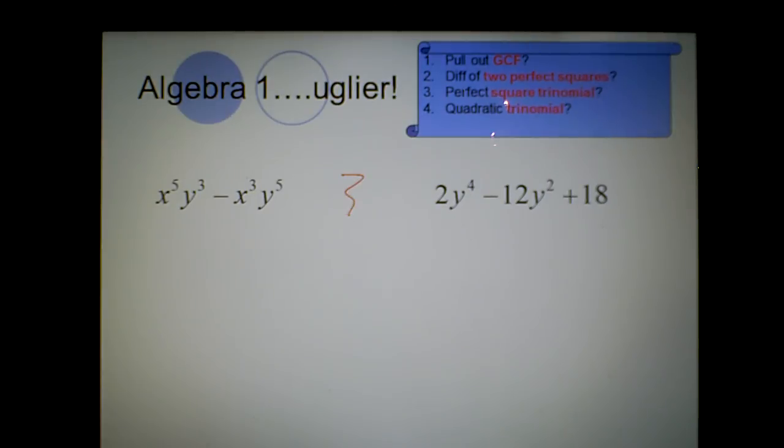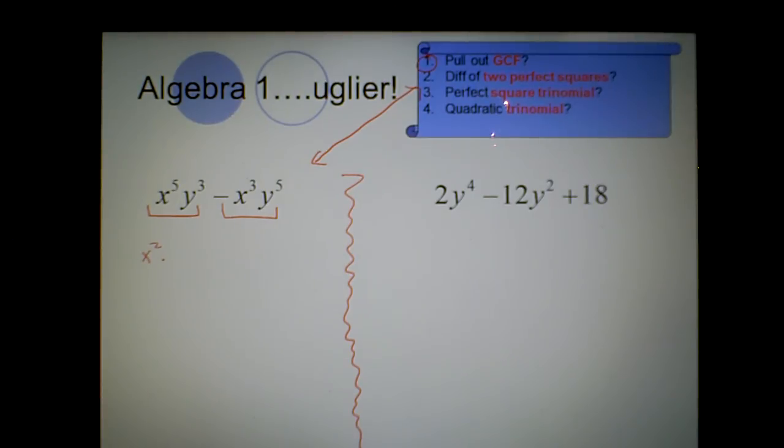Here's 2 more. So again, if you want to stop the video and try them. Given that I have two terms here, maybe this is the difference of two perfect squares. Certainly isn't the difference of two perfect squares yet, but greatest common factor. I can pull out two x's, and I can pull out, oh no, I can pull out three x's, right? And I can pull out three y's, which leaves me just with x squared minus y squared. x cubed, y cubed is prime. Don't write that as x times x times x and y times y times y. But x squared minus y squared is the difference of two perfect squares. Done.